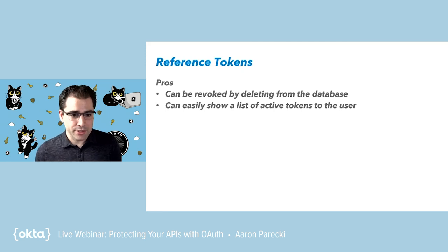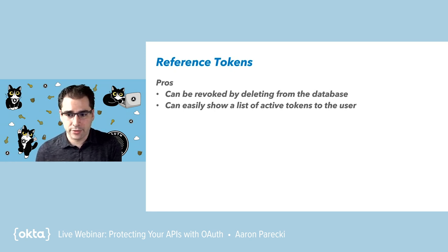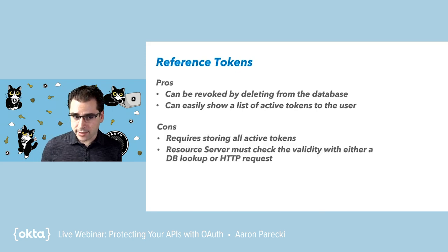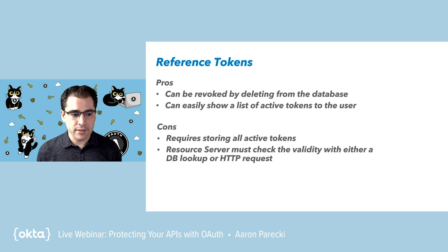There are a couple of advantages to using reference tokens — where it's just a short random string as a record in a database. If you wanted to revoke a token, you can actually just go and delete it from the database. The next time something looks in the database, it won't find it, which effectively means it's revoked. It's also possible to show a list of all the active tokens to a user, because you just look in the database and there are all the active sessions. There are a couple of downsides as well. In order to implement this, you have to store all active tokens, which is potentially a lot of data. If you only have like 10,000 users and only a couple of different apps per user, that's not a ton of data. But if you start getting to millions of users, that becomes a bit of a burden on your storage system.